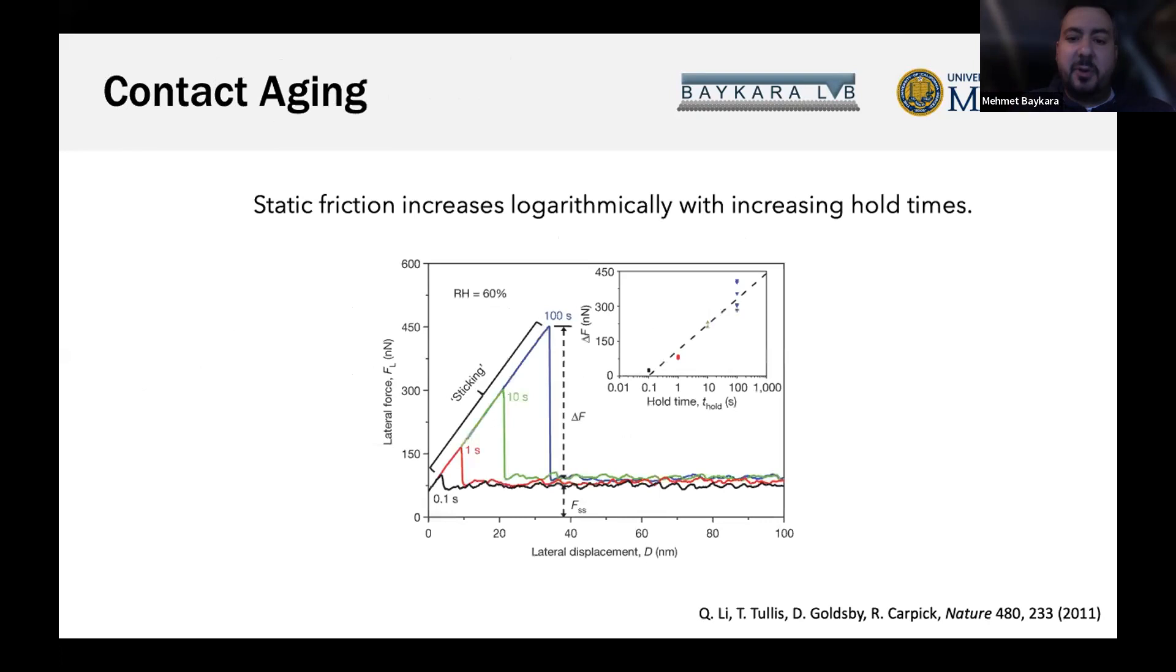When thinking about contact aging, one paper that comes to mind is from Rob Carpick's group in Nature 2011. They used silicon oxide tip and wafer doing slide-stop-slide experiments, waiting certain times before initiating sliding. They found that static friction increases logarithmically with time - the more time the slider spends on the substrate, the higher the static friction. This was explained through formation of chemical bonds over time. For structurally superlubric contacts, it's interesting whether similar effects occur.